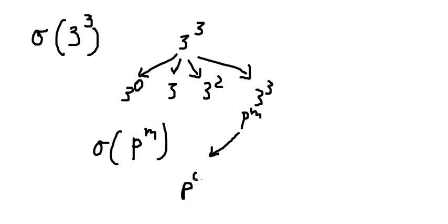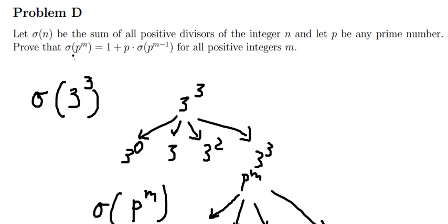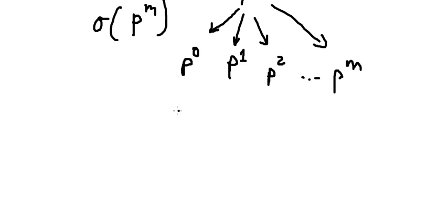P to the power of 0, P to the power of 1, P to the power of 2, and so on until P to the power of M. That means we need to transform this into this form.